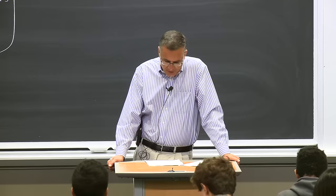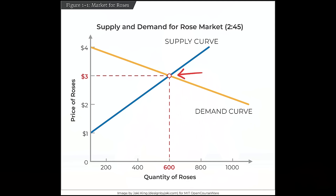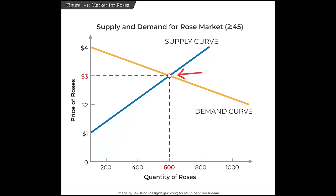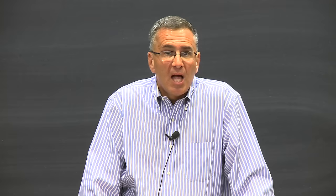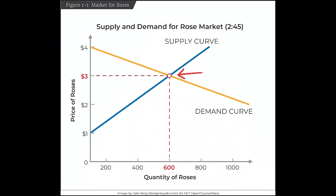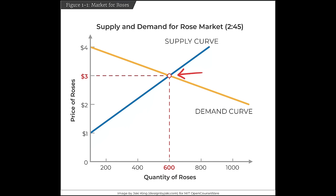Today we're going to start talking about what's underneath the demand curve. Last time, and in section on Friday, we talked about the workhorse model of economics: the supply and demand model. We always start the class with that, because it's the model of the course. But as any good scientist with an inquisitive mind, you're probably immediately asking: where do these supply and demand curves come from? They don't just come out of thin air.